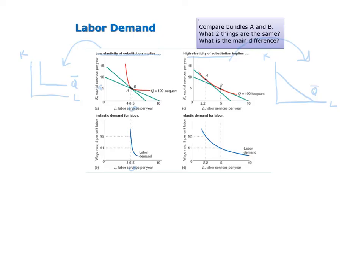On the other hand, for the graph on the right where input substitutability is relatively high, we do see a relatively big substitution towards the labor and away from the capital, so we do see a relatively large responsiveness of labor demanded to the change in the price.